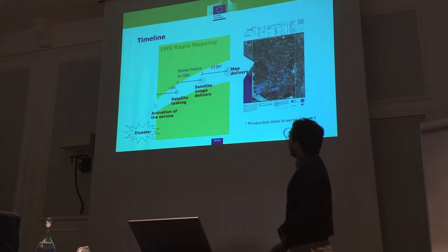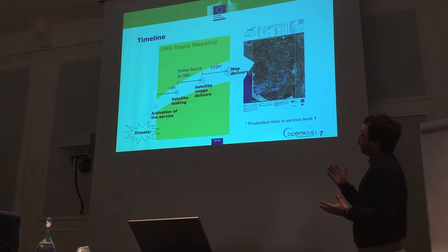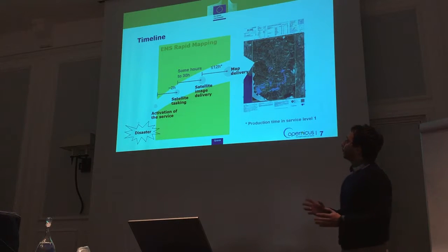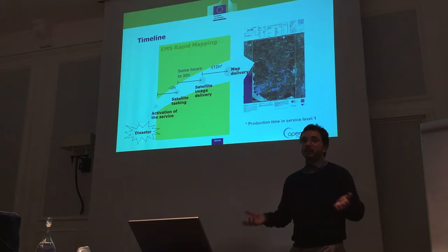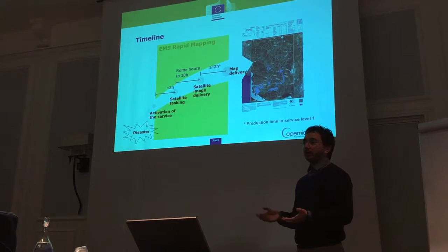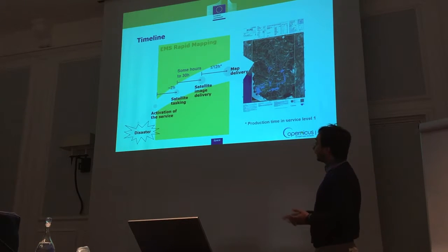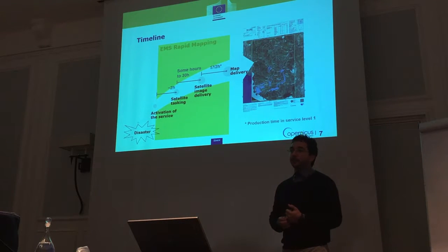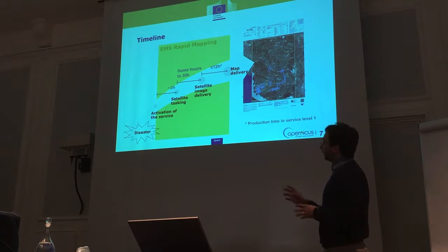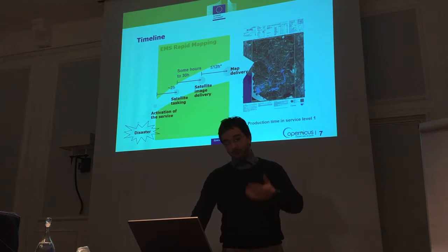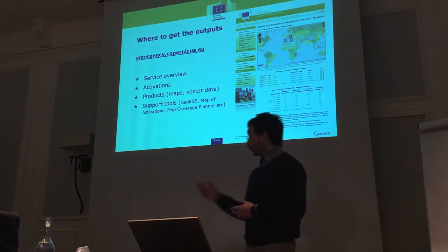In this timeline we have an idea of the time span from the disaster to the product delivery. The most variable part is the satellite tasking, because in flood events the sky is usually cloudy, so we have to wait for the clouds to clear before getting the images. But when images are delivered to the service provider, within 12 hours we have the first map, because they work day and night in different parts of Europe. Then the work continues with new map releases over the next days.